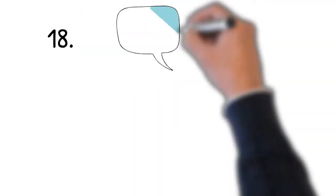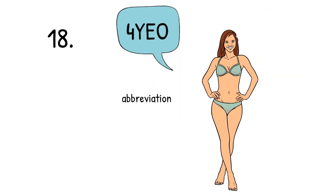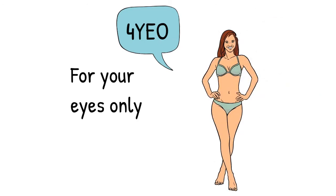Text number eighteen, 4YEO is an abbreviation for what? For your eyes only. You would say this if maybe you sent a picture of yourself in a bikini to your boyfriend and you ask him to not show this picture to other people. It is for his eyes only. So, you know, keep it to yourself. It's like a secret kind of.